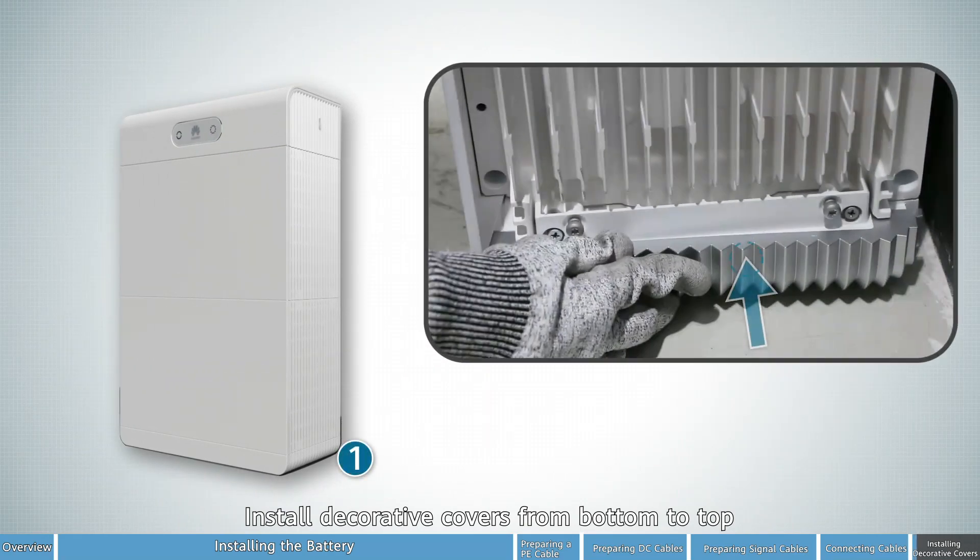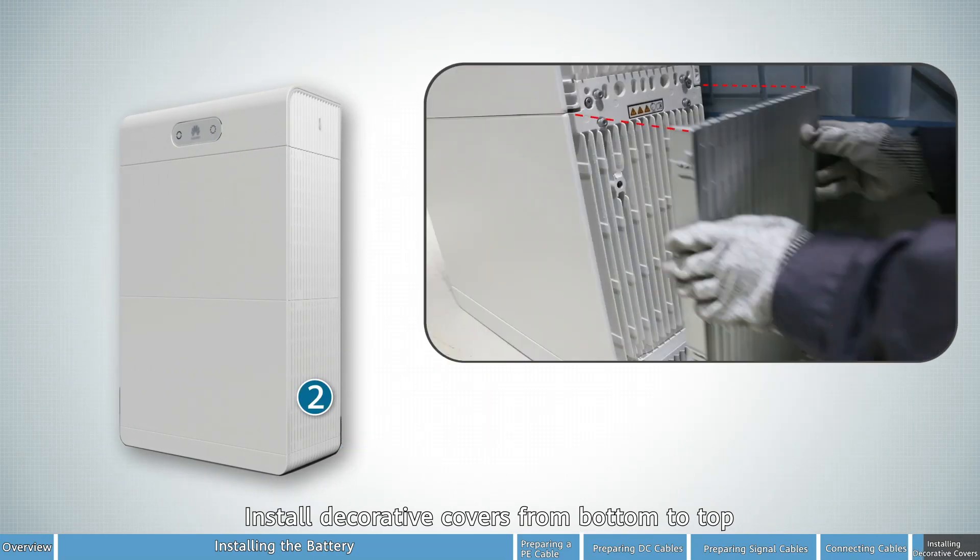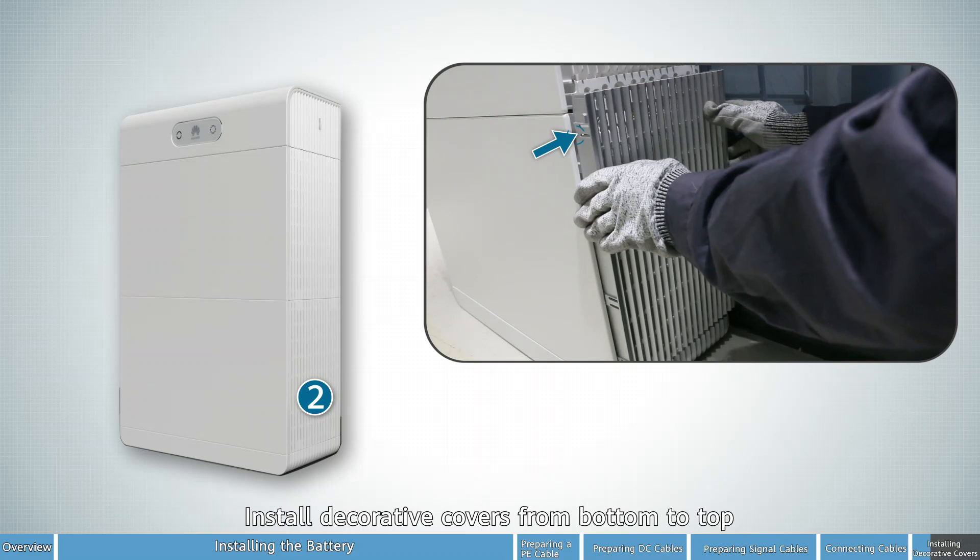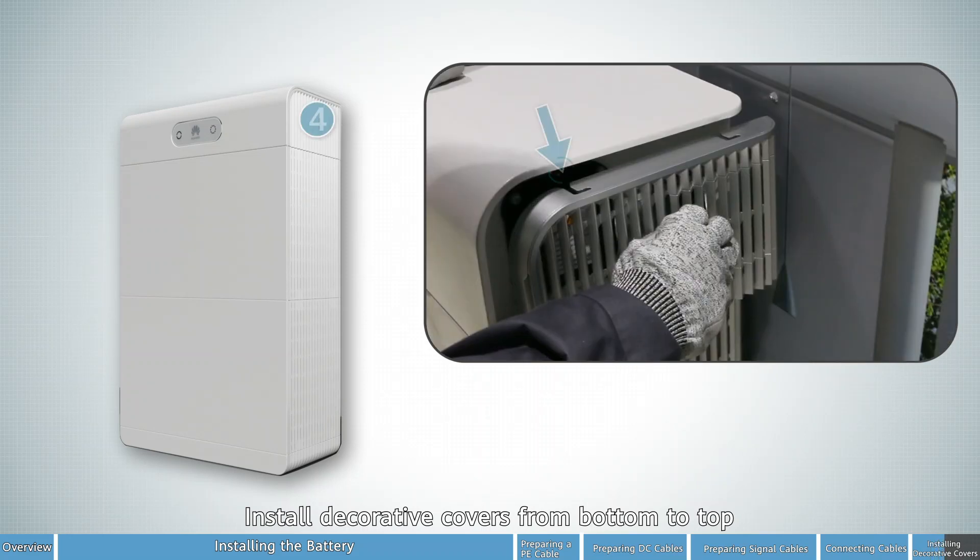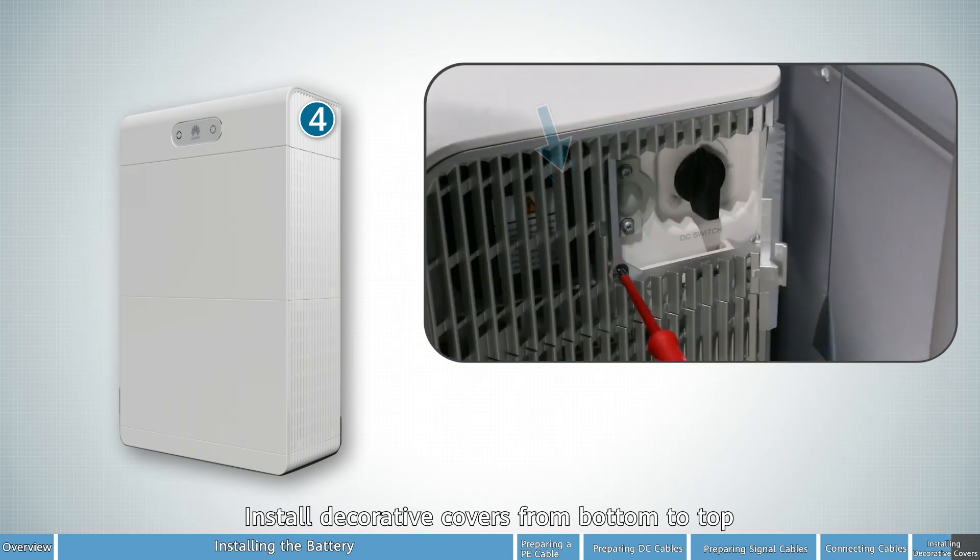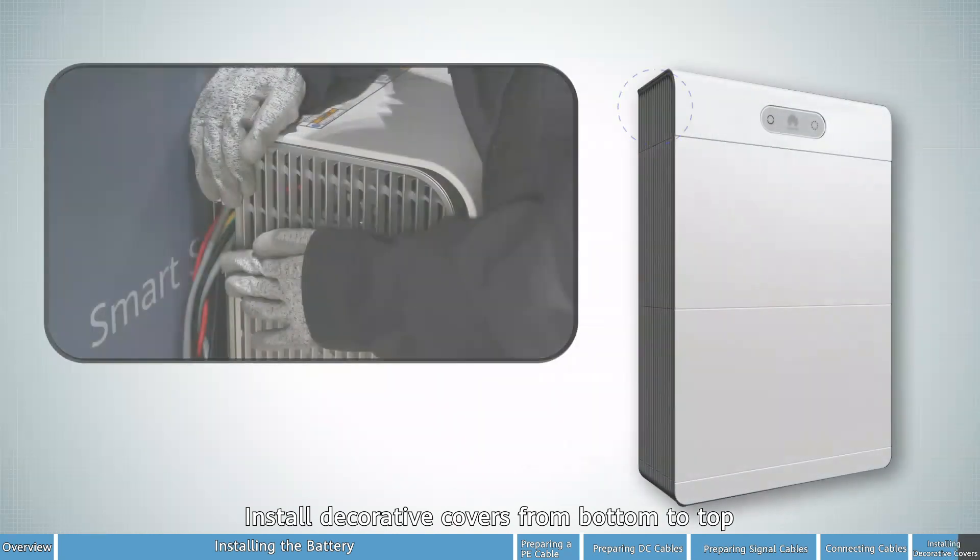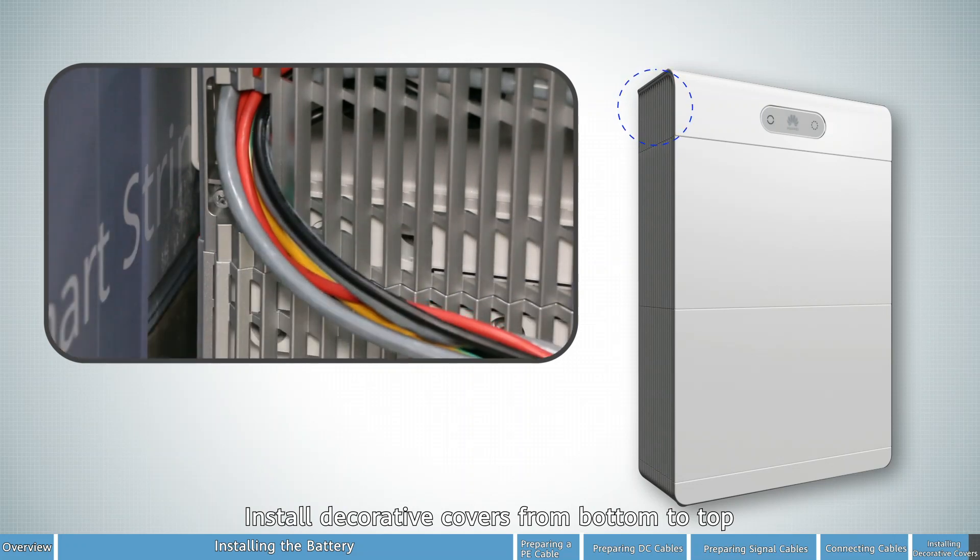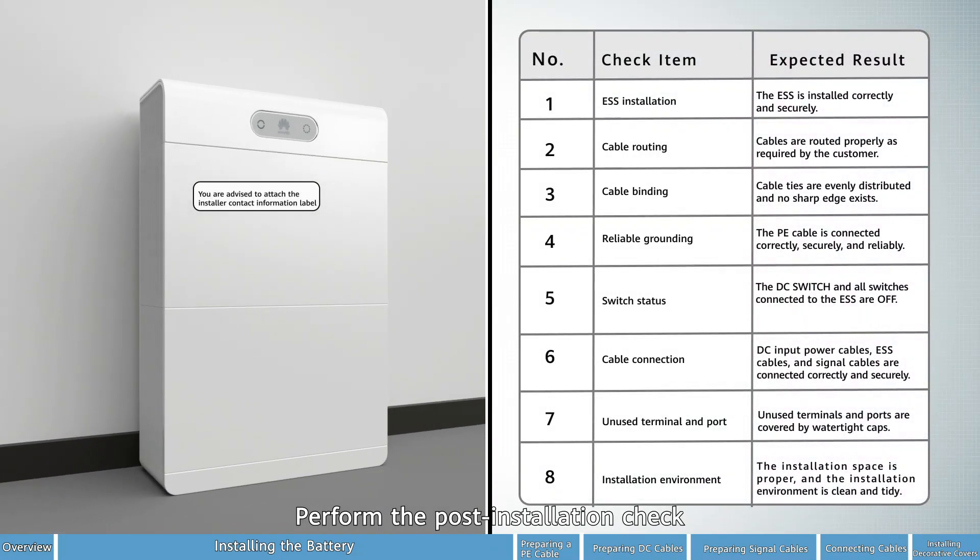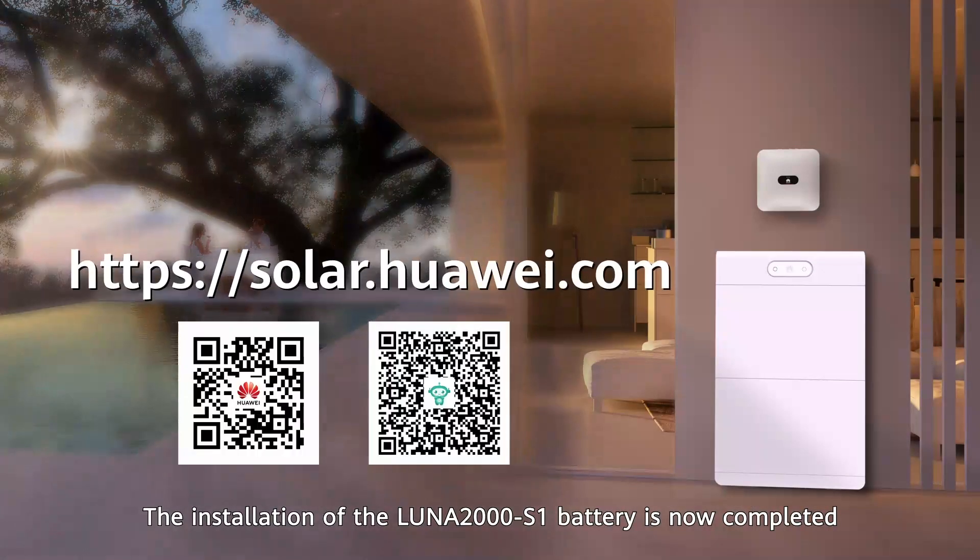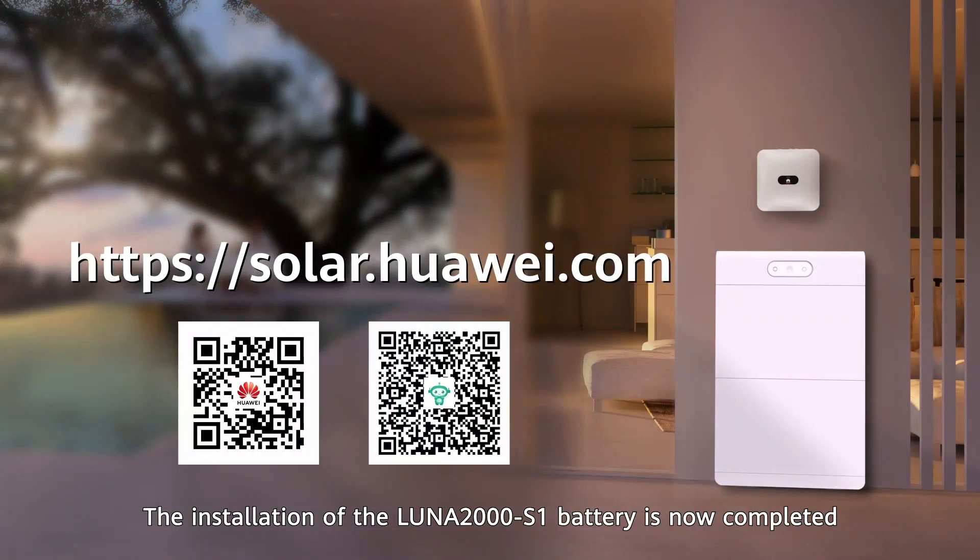Install decorative covers from bottom to top. Perform the post-installation check. The installation of the Luna 2000 battery is now completed.